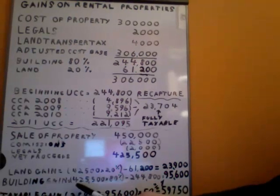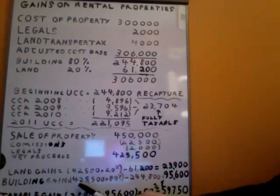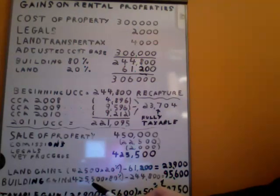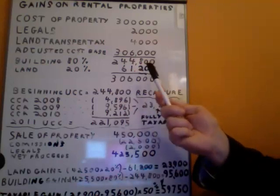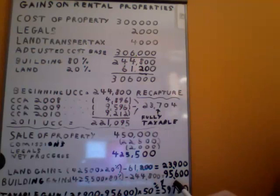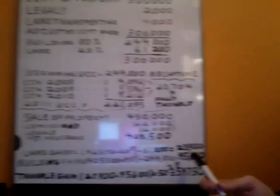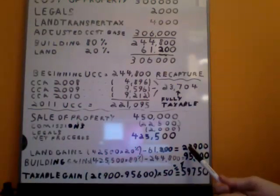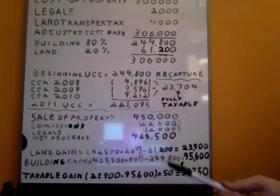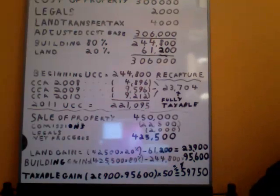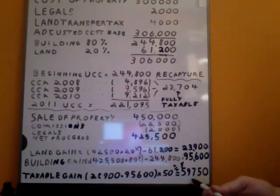For the building, we calculate the gain on the building: $425,500 times 80%, less the ACB of the building portion of $244,800, gives you a capital gain on the building of $95,600. Now we can see the taxable capital gain, which is the two amounts added together — $23,900 plus $95,600 — times 50%, which works out to $59,750. That would be his taxable capital gain on the disposition of this rental property in 2011, picked up on line 127, taxable capital gains of your T1 general Canadian income tax return.